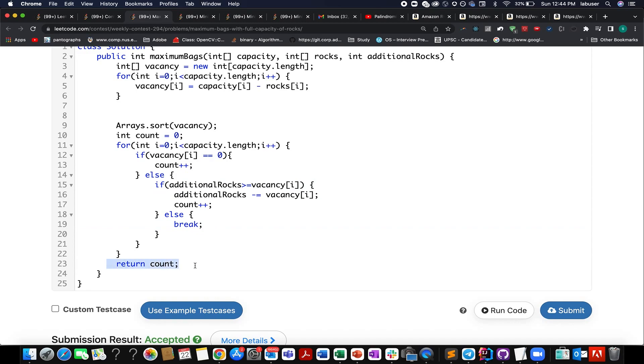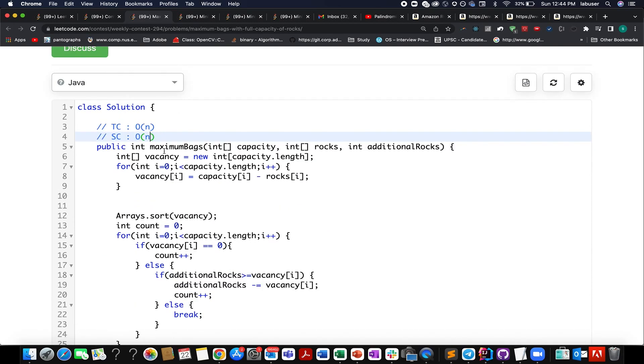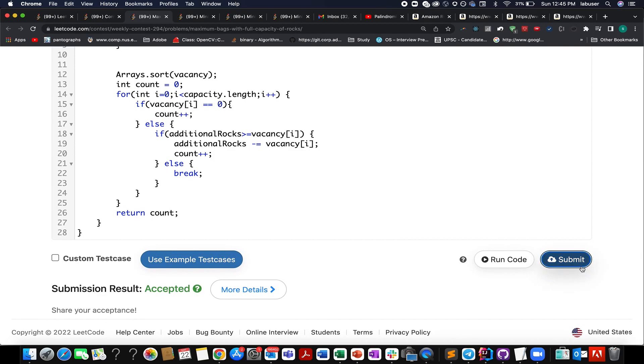I have created an extra vacancy array, but it is not needed. You can manipulate the capacity array for creating, for identifying the vacancy and this is not needed. It can be solved in order of one as well. I hope most of you will be able to do it by yourself and treat it as your homework after going through the solution. So let's submit this.